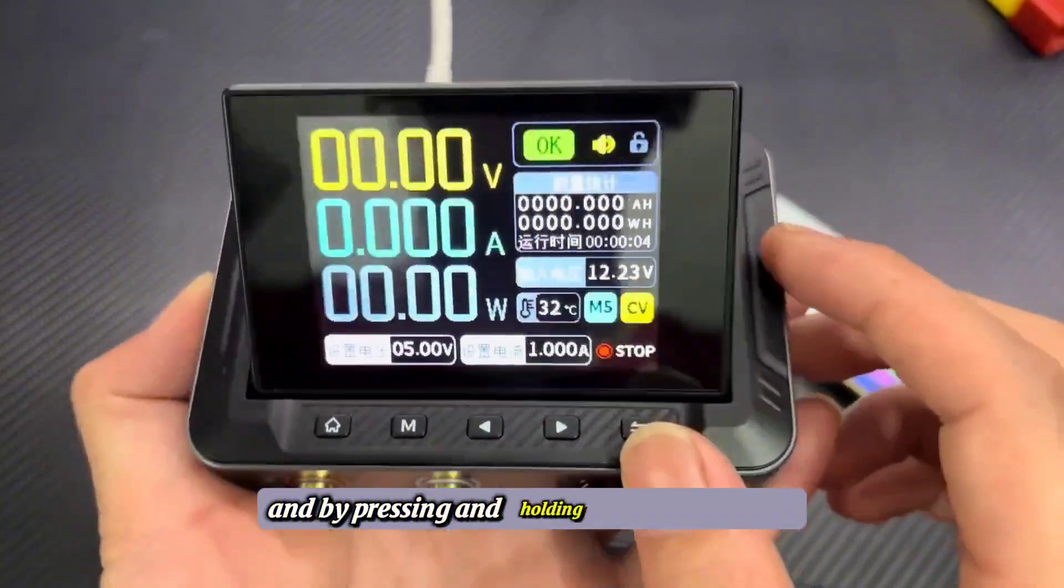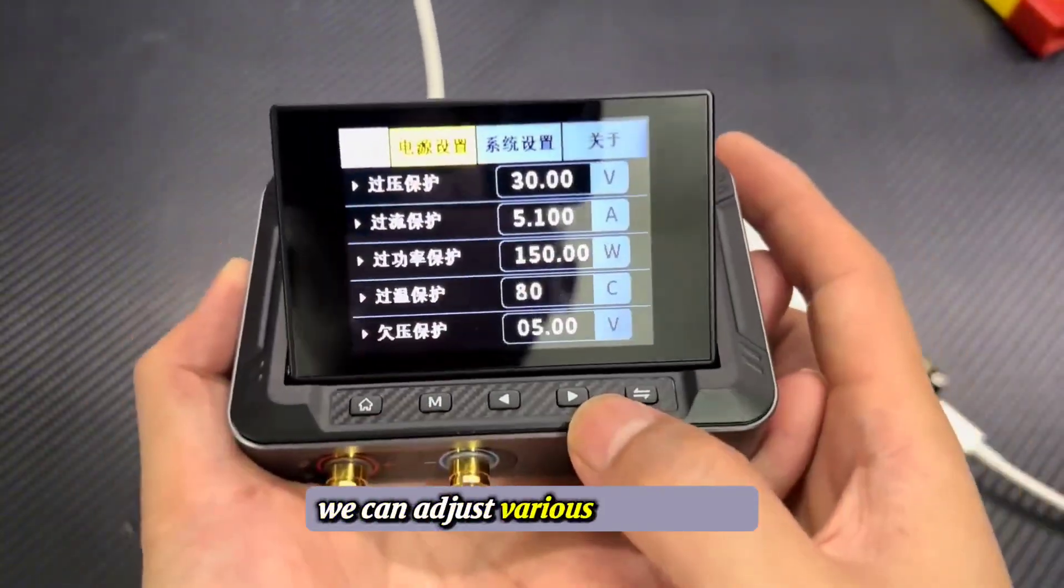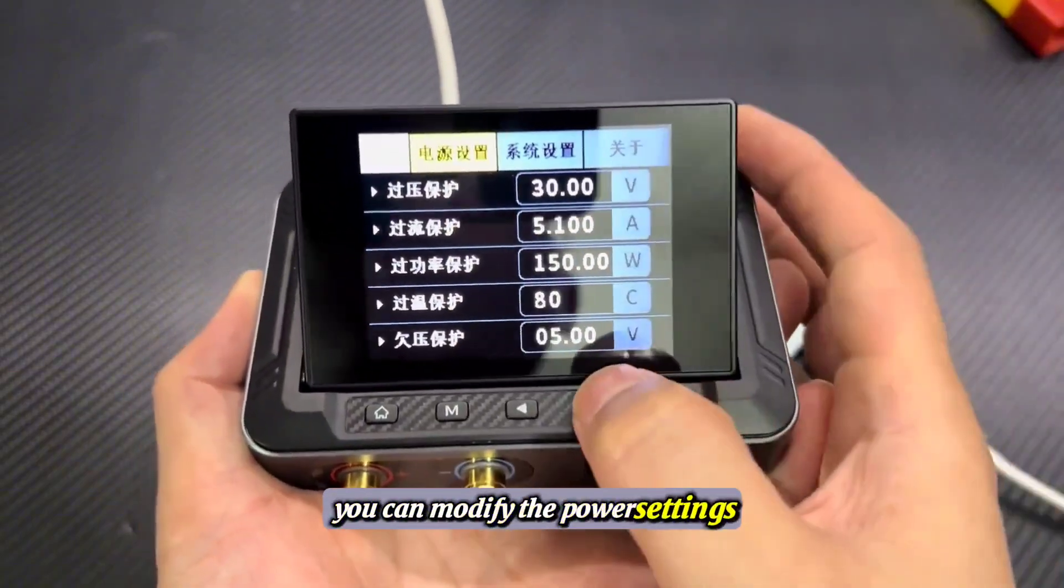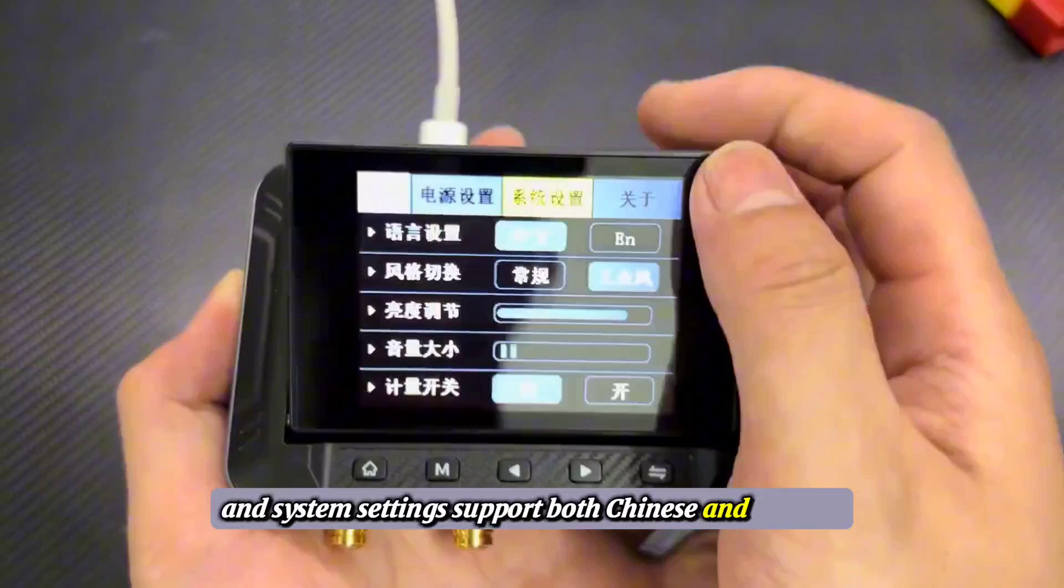By pressing and holding the home button, we can adjust various parameters. You can modify the power settings, and system settings support both Chinese and English.